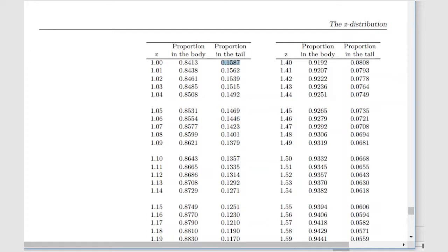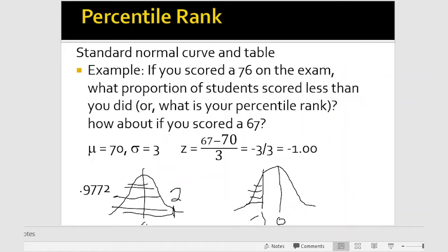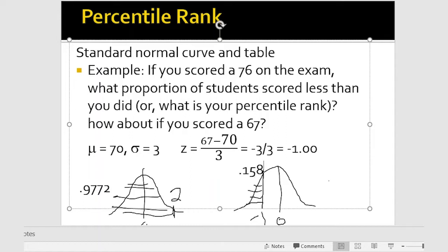The correct answer here would be 0.1587 — so that's the proportion. That person scored at about the 16th percentile. I'm hoping these two examples give you a sense for how to figure out percentile ranks, and as always, if you have questions feel free to send me an email.